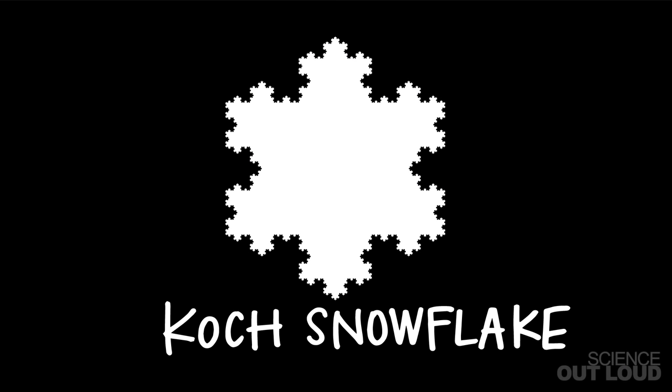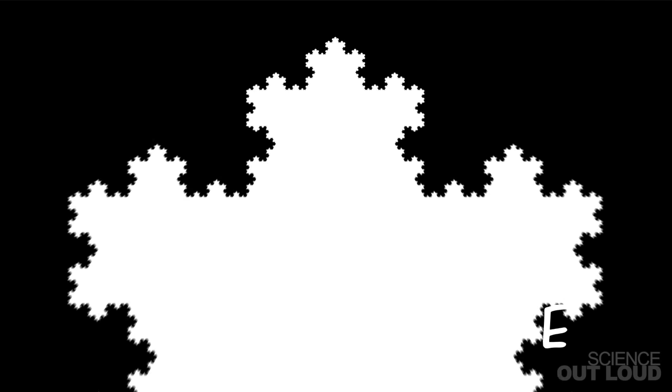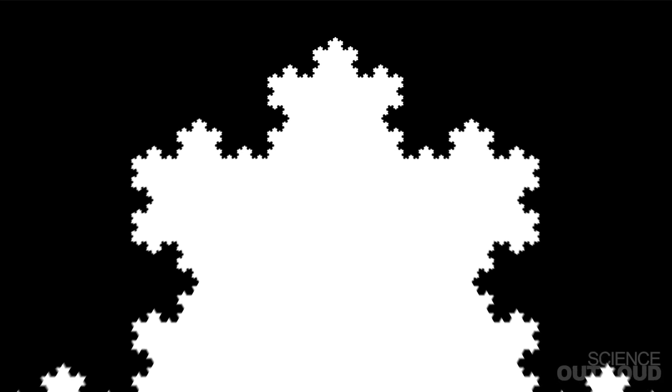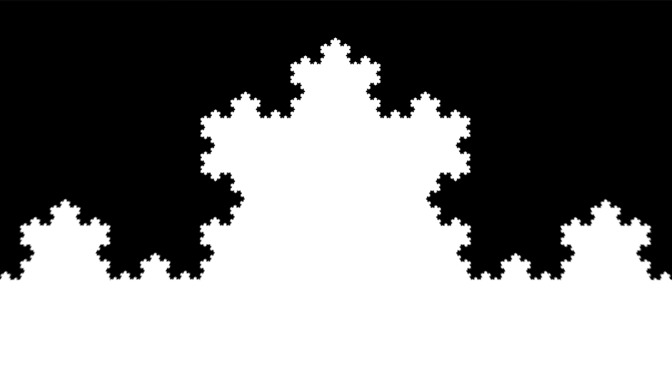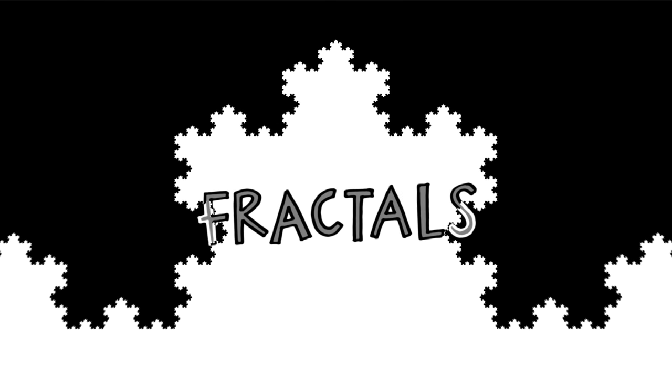This is called a Koch snowflake, and it has a special property. No matter where I look or how much I zoom in, I will see the same pattern over and over. Never-ending patterns like this, that on any scale, on any level of zoom, look roughly the same are called fractals.